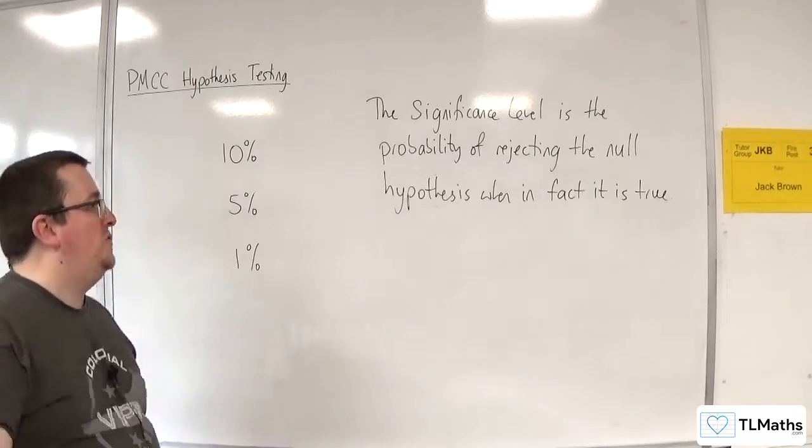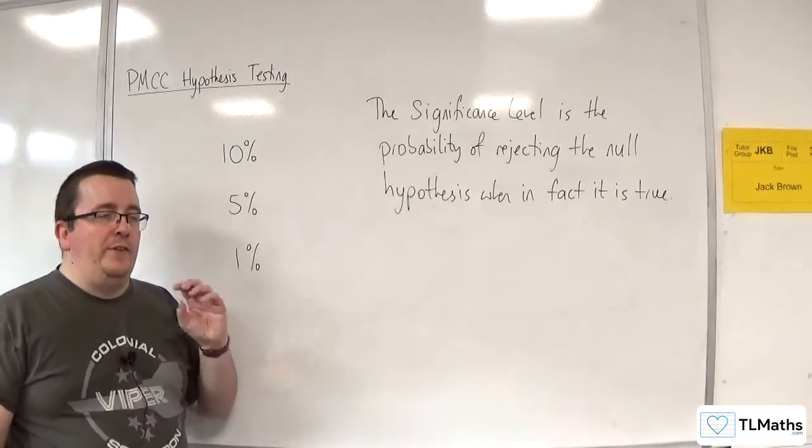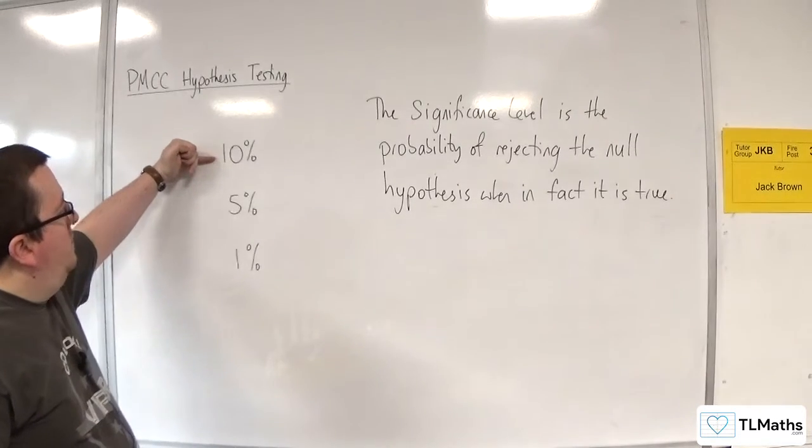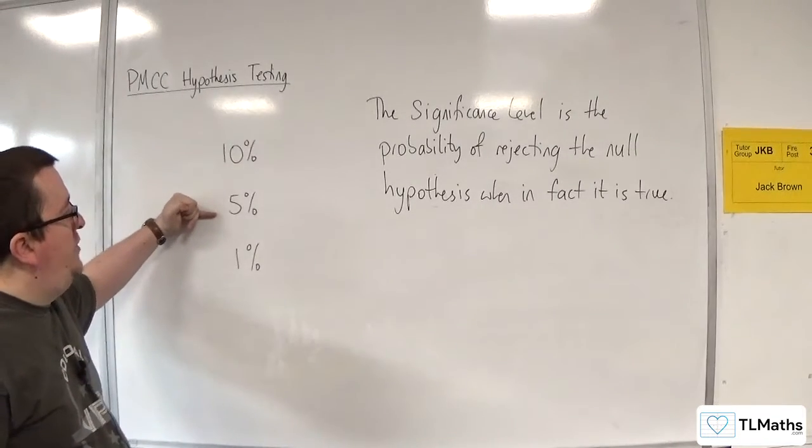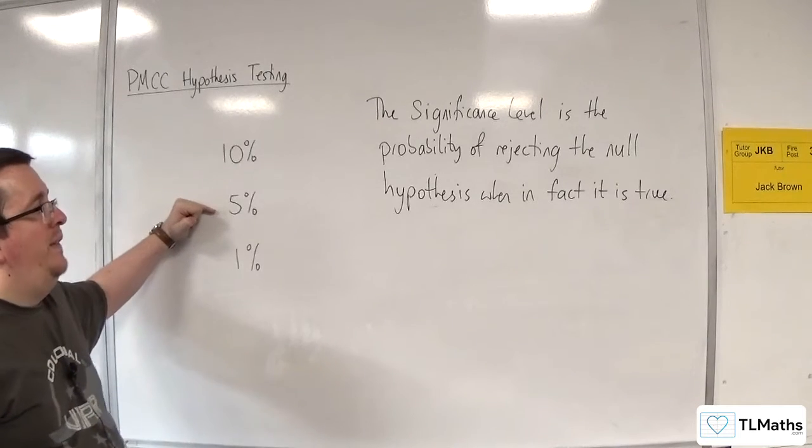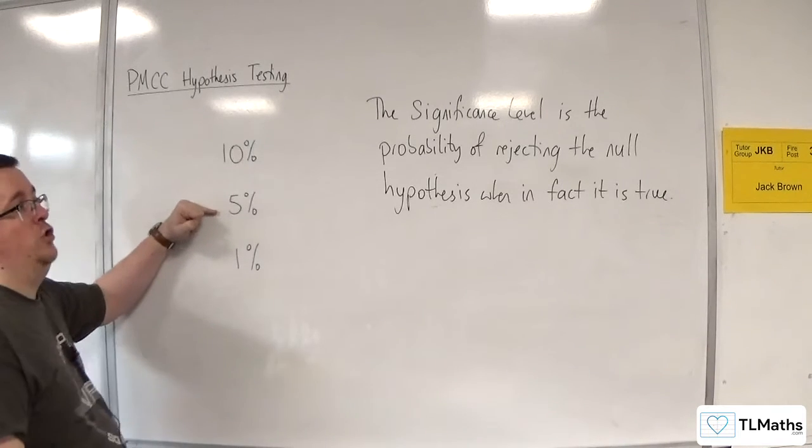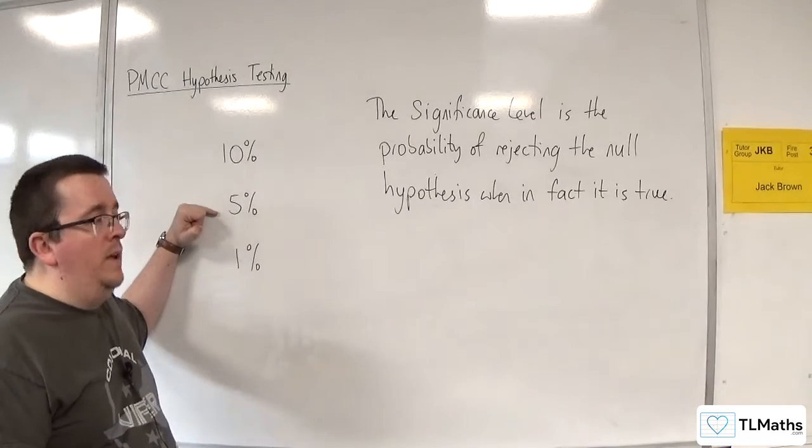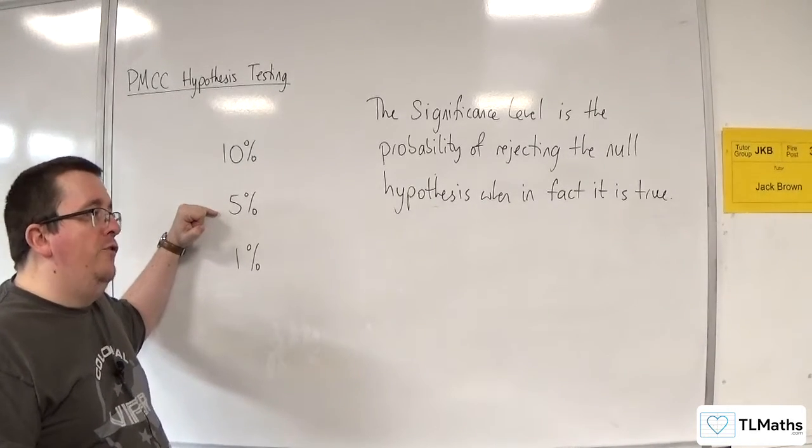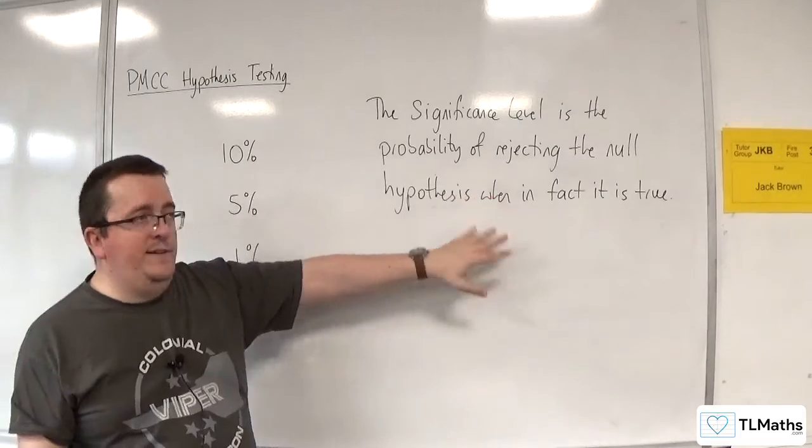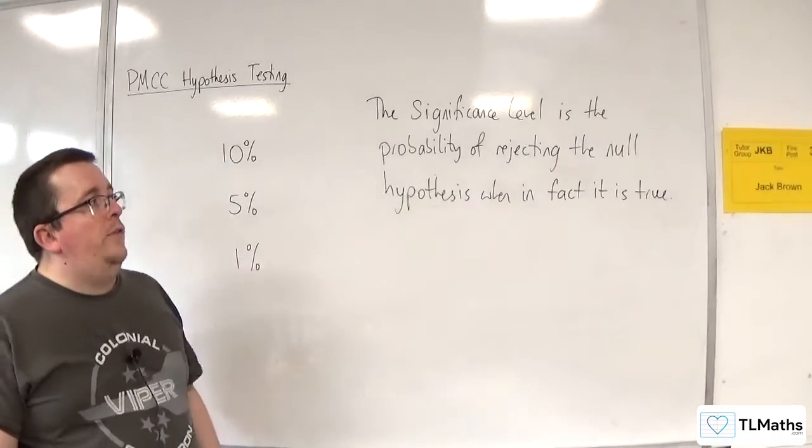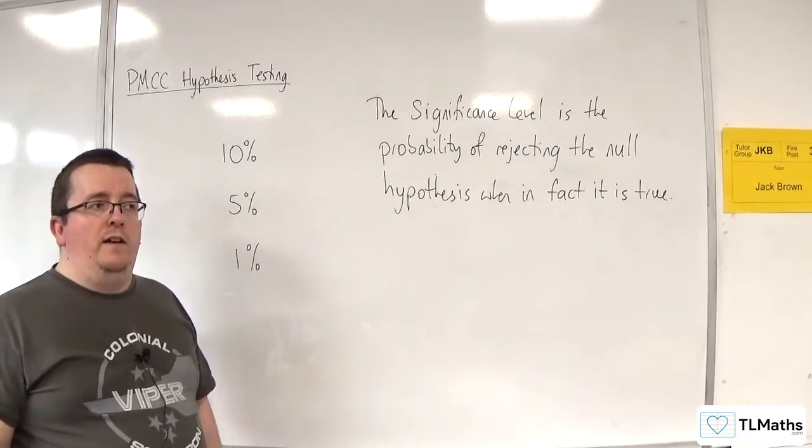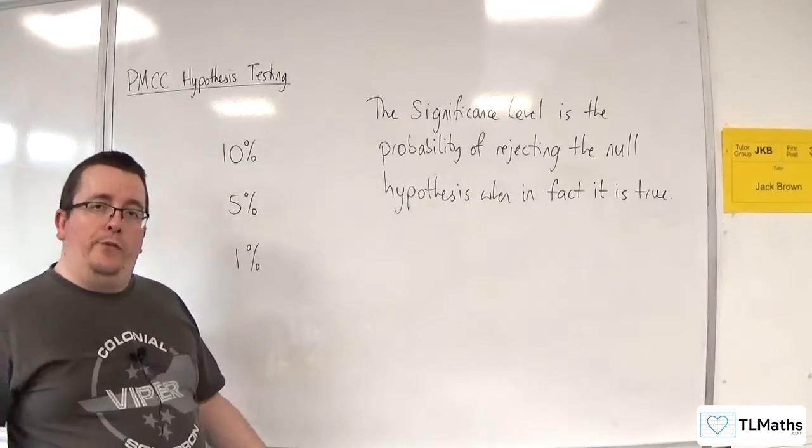But the idea is there that if you reduced it down to 5%, now there's only a 5% chance of rejecting the null hypothesis when it is true. But when you do that, even though you've reduced the chance of that bad thing happening, the problem now is that you have reduced the chance of rejecting the null hypothesis when, in fact, it is false.